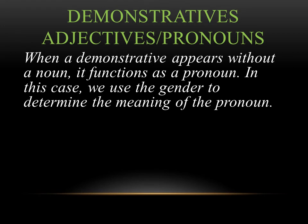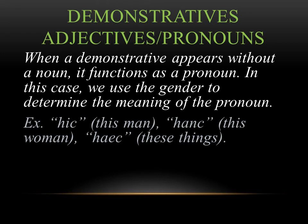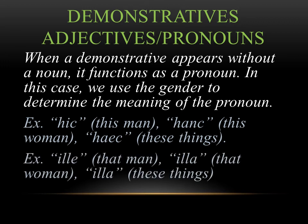When a demonstrative appears without a noun, it functions as a pronoun. In this case, we use the gender to determine the meaning. If you saw hic by itself, since it's masculine, you're saying this man, even if the word man is not in your sentence. Haec would be this woman; haec (neuter plural) would be these things. For ille, illa, illud — if it's masculine, that man; illa would mean that woman; illa (neuter plural) would mean those things.